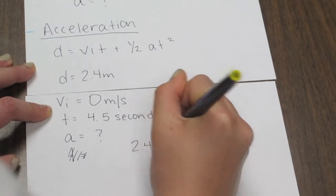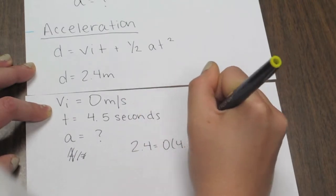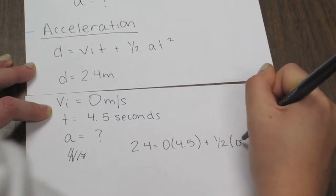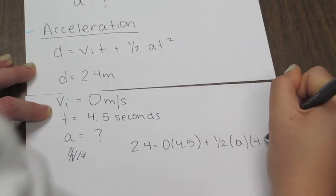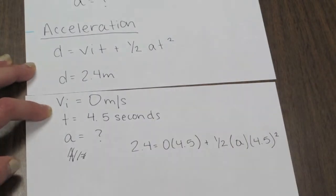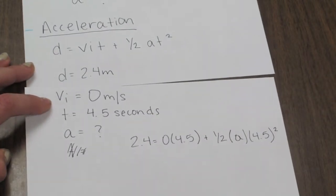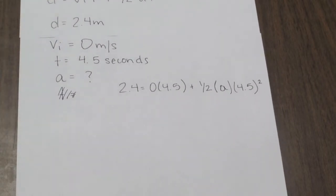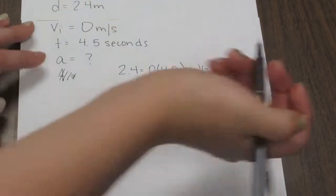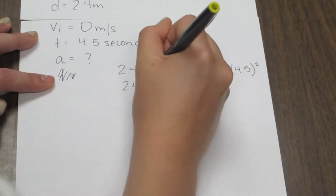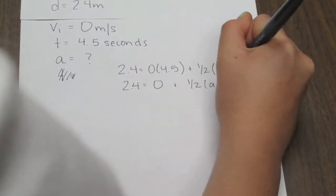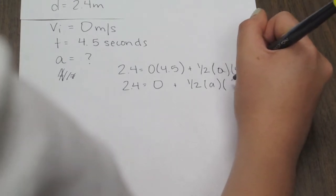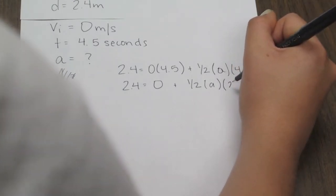Now plug everything you know into the acceleration formula: 2.4 equals 0 times 4.5, plus one-half times a times 4.5 squared. When you simplify the formula, it looks like 2.4 equals 0 plus one-half times a times 20.25.